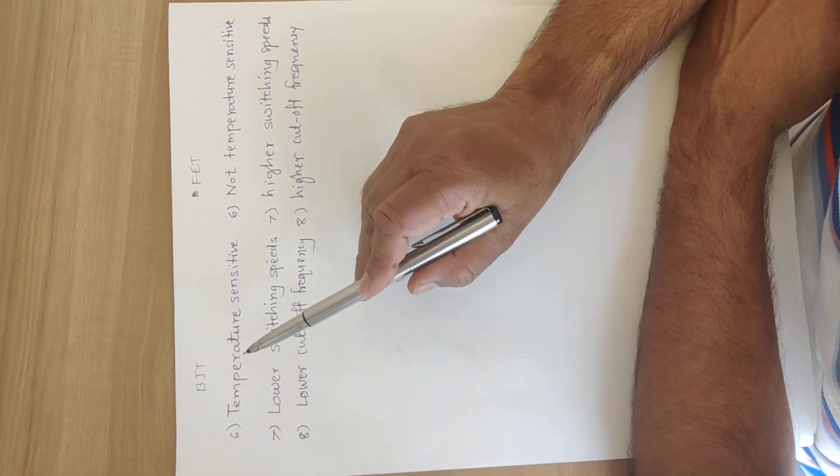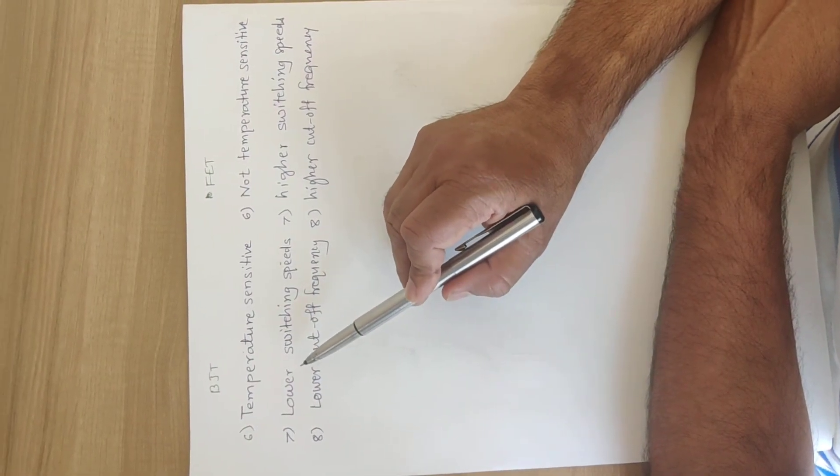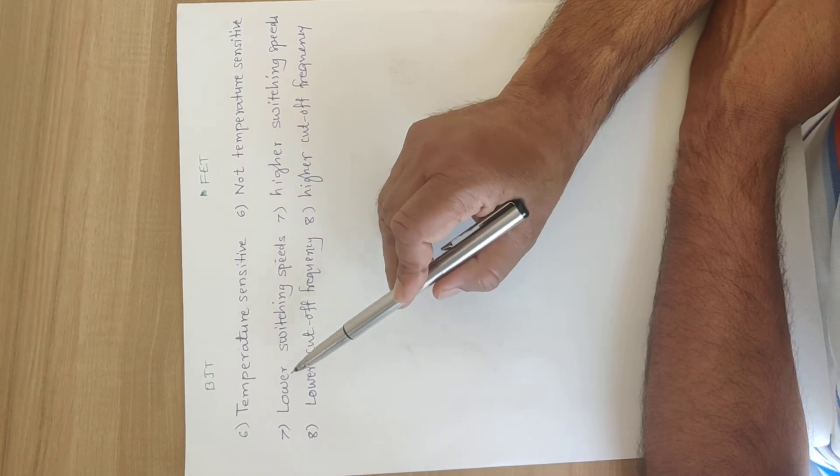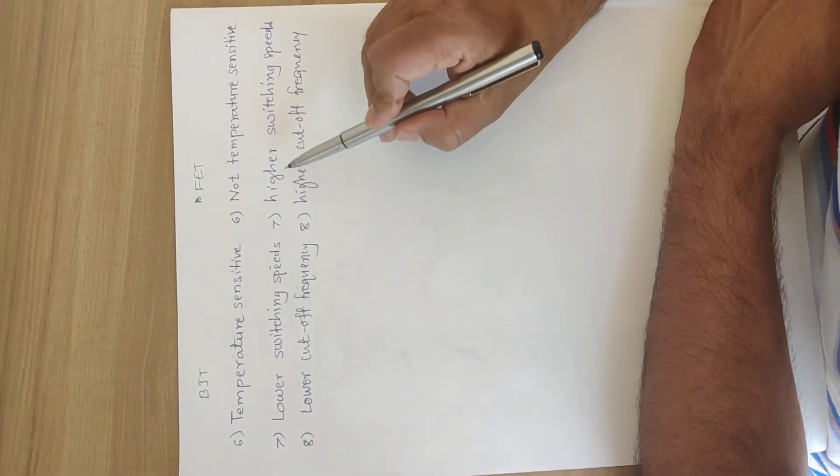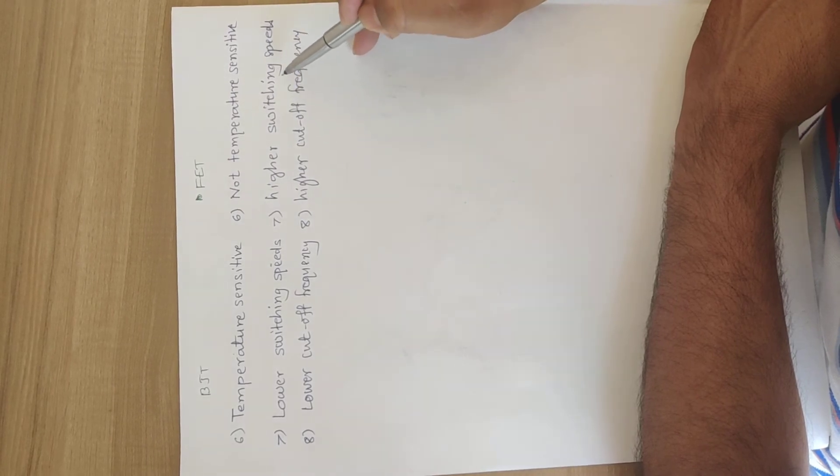Due to the temperature sensing and frequency constraints, BJT is having lower switching speeds. In FET, the switching speed is very high.